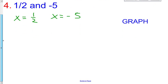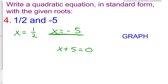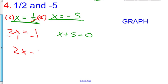Now I want to get a 0 on the right side. For x equals negative 5, all you have to do is add 5, so you get x plus 5 equals 0. For x equals 1 half, remember standard form is ax squared plus bx plus c equals 0, so we want to get rid of the fraction. Multiply both sides by 2 to get 2x equals 1, then subtract 1 to get 2x minus 1 equals 0. And we also have x plus 5 equals 0.